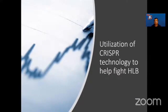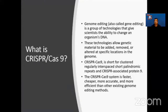The second aspect is the utilization of CRISPR technology to help fight HLB. CRISPR is a big deal in most of the world right now because it is a new, very precise genome editing technology with huge impact on both agriculture and human health. CRISPR-Cas9 is a genome editing technology that allows scientists the ability to change an organism's DNA — genetic material can be added, removed, or altered in specific locations in the genome. The CRISPR-Cas9 system is much faster, cheaper, more accurate, and more efficient than other existing genome editing systems.